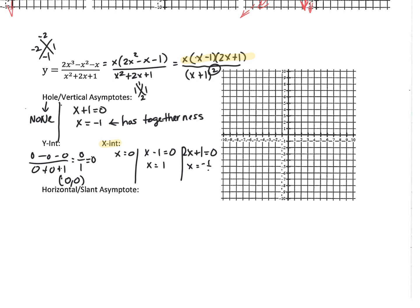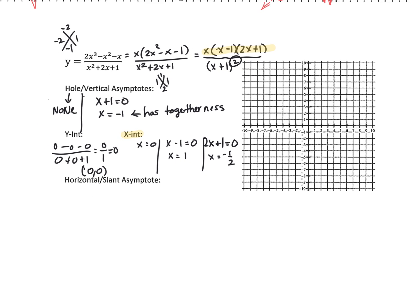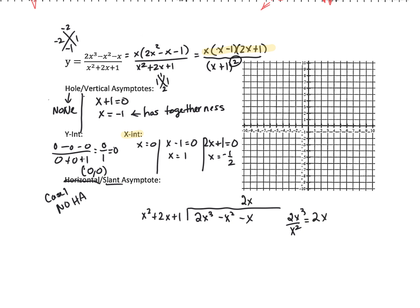This is a case 1 situation — the degree of the numerator exceeds the denominator — so there is no horizontal asymptote. We have a slant asymptote, found by polynomial long division: dividing 2x³ minus x² minus x by x² plus 2x plus 1. We get 2x as the first term. Multiplying and subtracting leaves negative 5x² minus 3x. Dividing gives negative 5. So the slant asymptote is at y equals 2x minus 5.